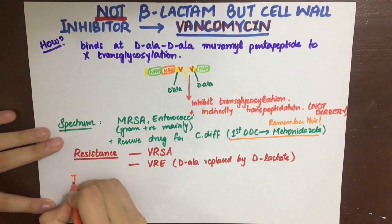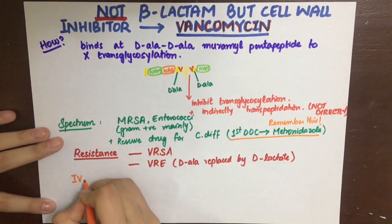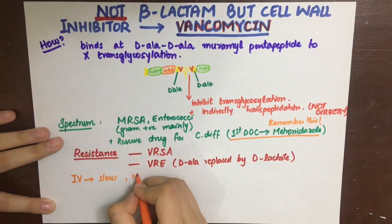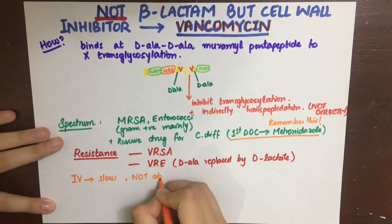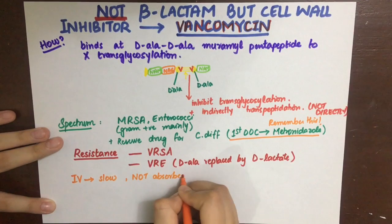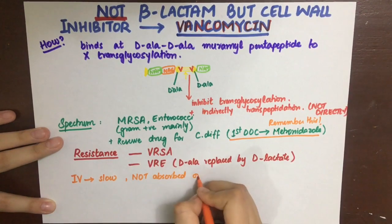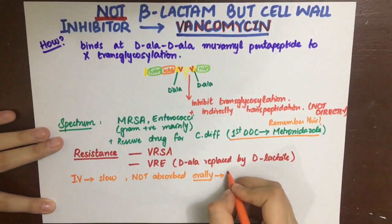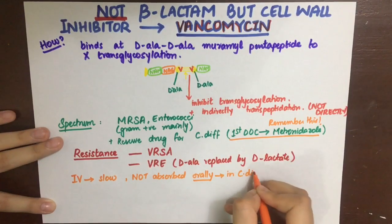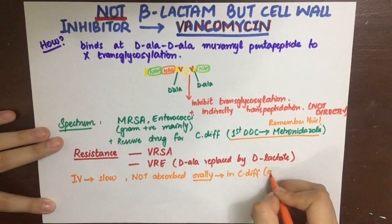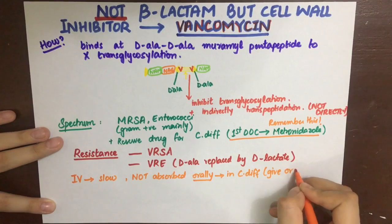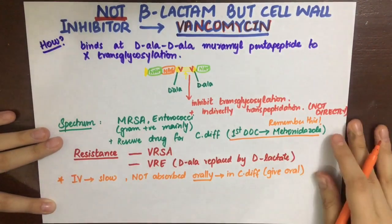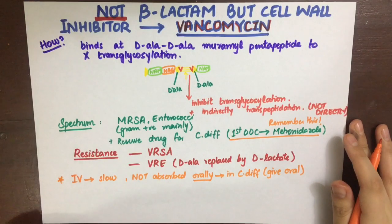By substituting D-alanine with D-lactate, the target is no longer recognized by vancomycin, and thus the organism is resistant to it. Vancomycin is only given IV or IM and is not absorbed orally from the GIT. However, if you want to give it for Clostridium difficile infection, you can give it orally — because it will not be absorbed and will perform its function directly in the GIT where intended.